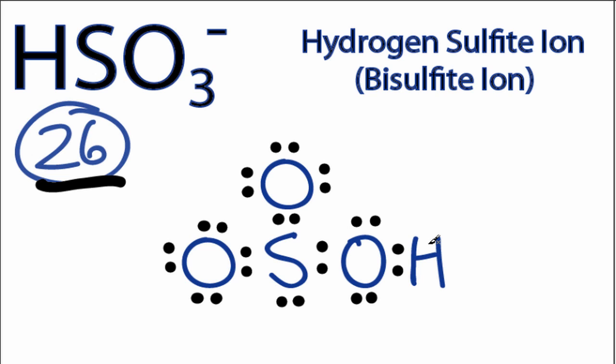However, when you look at the periodic table, sulfur is in period three, that means it can hold more than eight valence electrons. So we really want to look at the formal charges here.